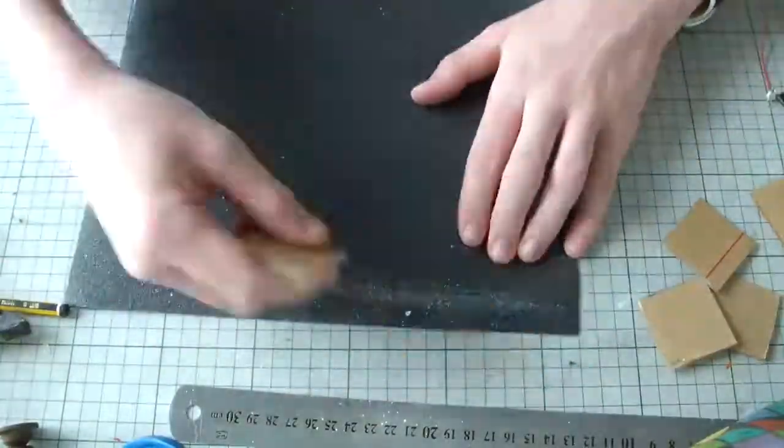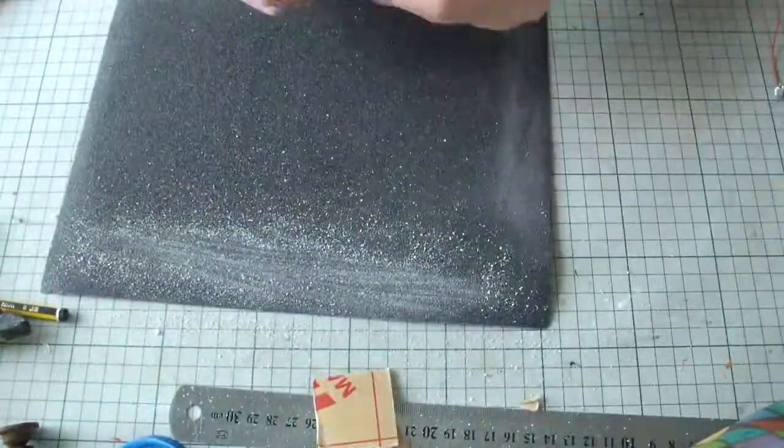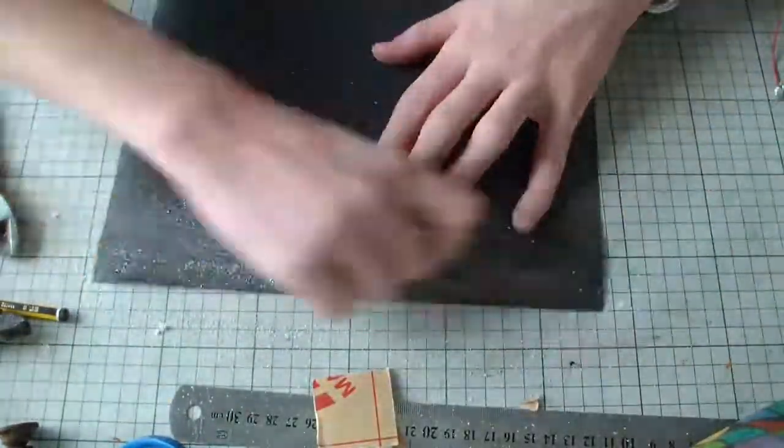I sanded the edges with rough grit sandpaper to get straight edges and be closer to a perfect cube. I also sanded the faces to diffuse the lighting. For this, you would want to use fine grit sandpaper.